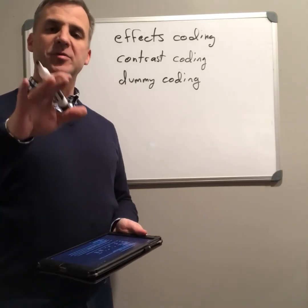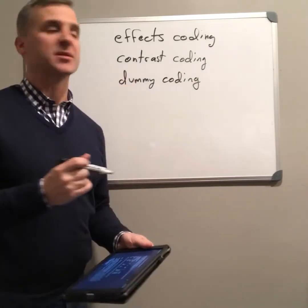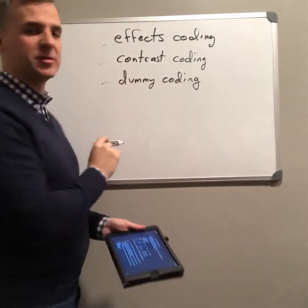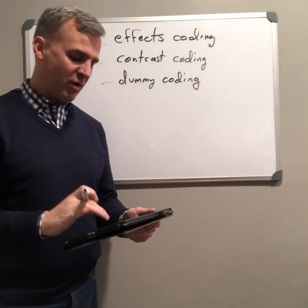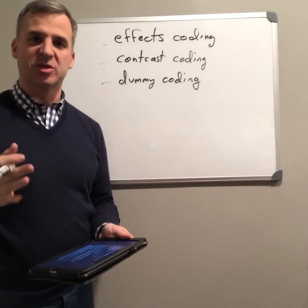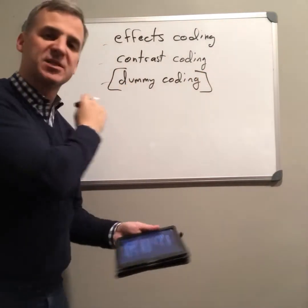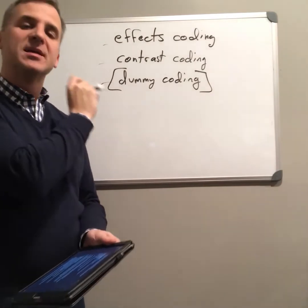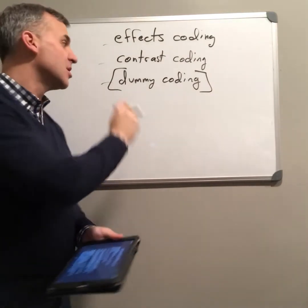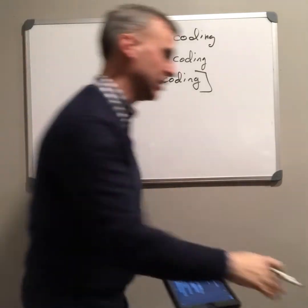When using nominal or categorical variables in regression, there are basically three different options: effects coding, contrast coding, or dummy coding. There are various reasons to use these, and it has to do with the interpretation of the data. We're going to talk about dummy coding today, because this is what you're going to see most often. Typically, when IO psychologists use categorical variables, they're going to use dummy coding.